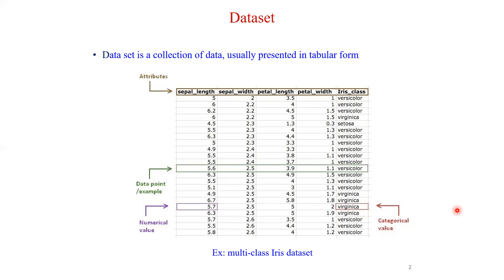You can prepare a data set of any kind. For example, if you want to prepare an animal data set, you can include features like animal size, animal color, whether it's black, animal width, and whether it has four legs. You can describe all the features of the animal and finally mention the name or category of the animal. That's how you can develop any kind of data set.